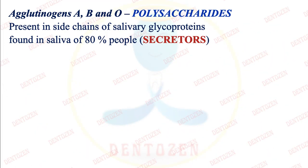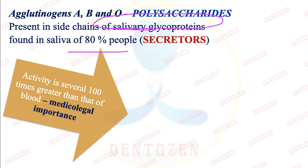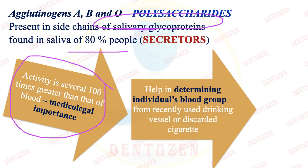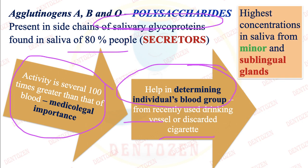So those are our other polypeptides: statherin and siline. Now, agglutinogen A, B, and O are found in the side chains of salivary glycoproteins in about 80% of people. Their activity in saliva is several times greater than in blood. This has medical and legal importance — at a crime scene, if saliva is found on a glass or cigarette, we can determine that individual's blood group and identify the criminal. The highest concentration of ABO antigens comes from minor and sublingual glands.